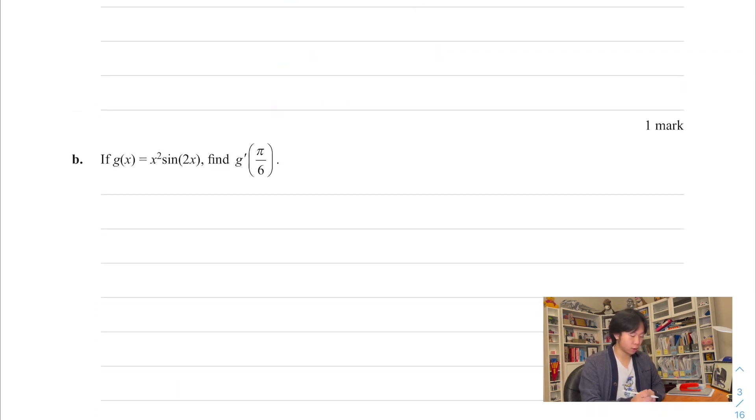Alright so here it asks me to find the derivative and sub in x equals pi over 6. What rule do I need to use here? I need to use product rule and that's as far as I go and I just make a note to myself, don't forget to sub in this. Maybe circle it when I start but don't forget to sub it in, don't just find the derivative and move on.